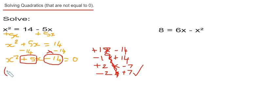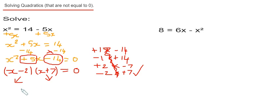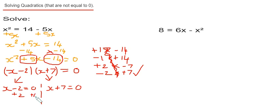So putting that into brackets, it will be x minus 2 times x plus 7 equals 0. We split the equation into two: x minus 2 equals 0 and x plus 7 equals 0. Solving the left side, we add 2 to both sides giving x equals 2. Solving the right side, we minus 7 from both sides giving x equals minus 7.